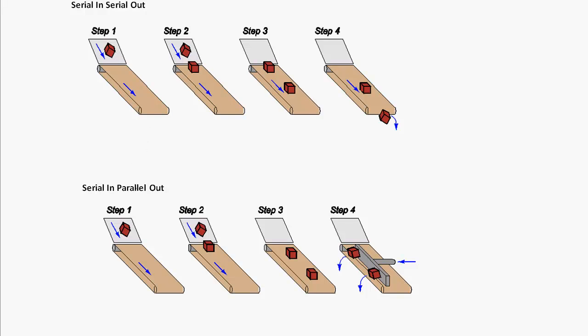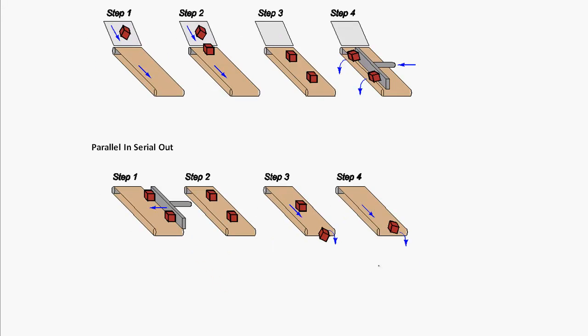There are a couple of other different forms that shift registers can take. In the serial-in, parallel-out form, bits come in one at a time onto the conveyor belt, and then they all get pushed off in a parallel manner — all at the same time. In the parallel-in, serial-out form, all the boxes — analogous to all the bits — get pushed onto the shift register at the same time, and then they get shifted off one at a time.